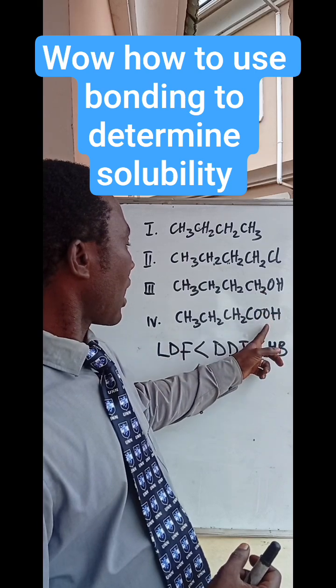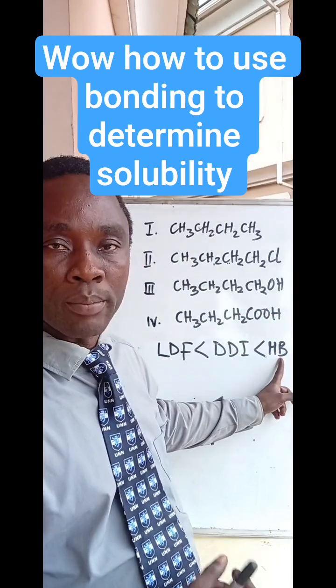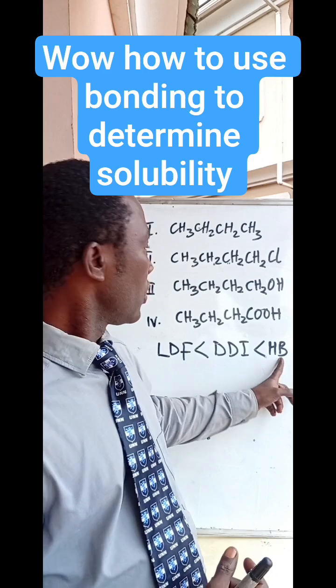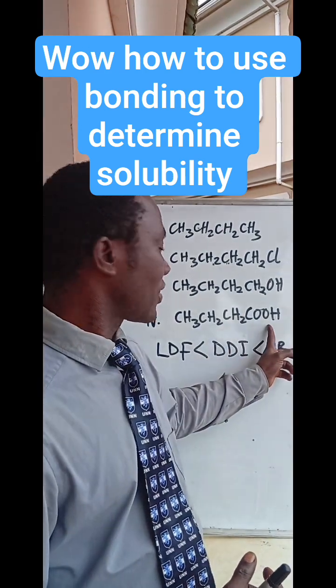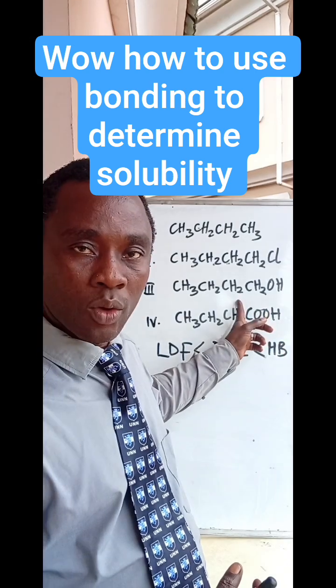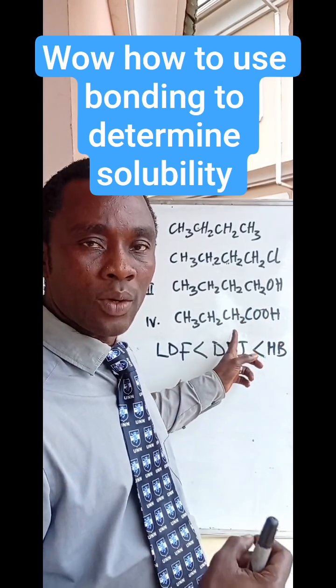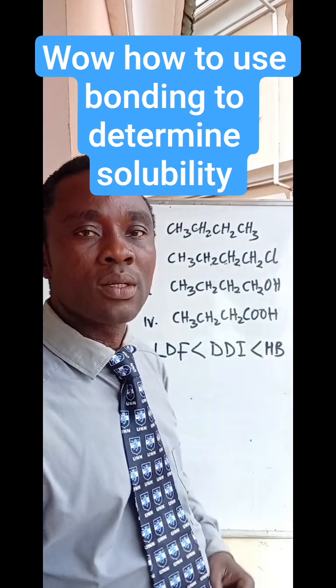This is butanol and butanoic acid. They have hydrogen bonding, so they are the most soluble. But of the two, which one is more soluble? Butanoic acid is more soluble than butanol, because in butanoic acid, there is delocalization. Thank you.